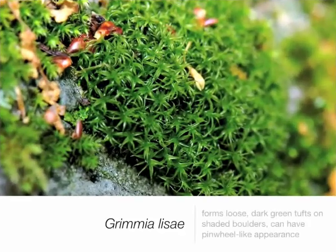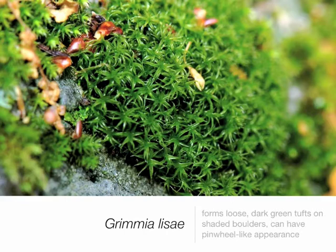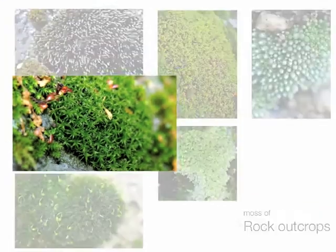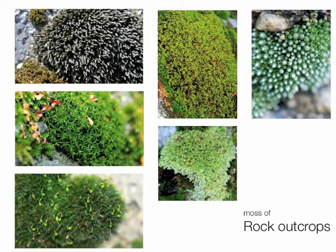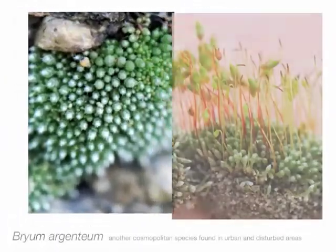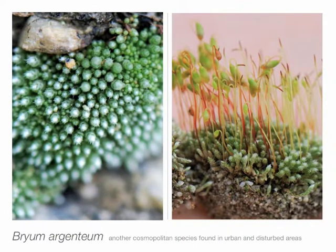Our next species, Grimmia lisae, grows in more shady portions of a boulder or rock, in loose tufts with a curved pinwheel-like appearance. Another cosmopolitan moss that, beyond rock outcrops, also grows in streets and sidewalk cracks in urban areas is Bryum argenteum, also known as the silvery moss. It has that characteristic beautiful silvery color.